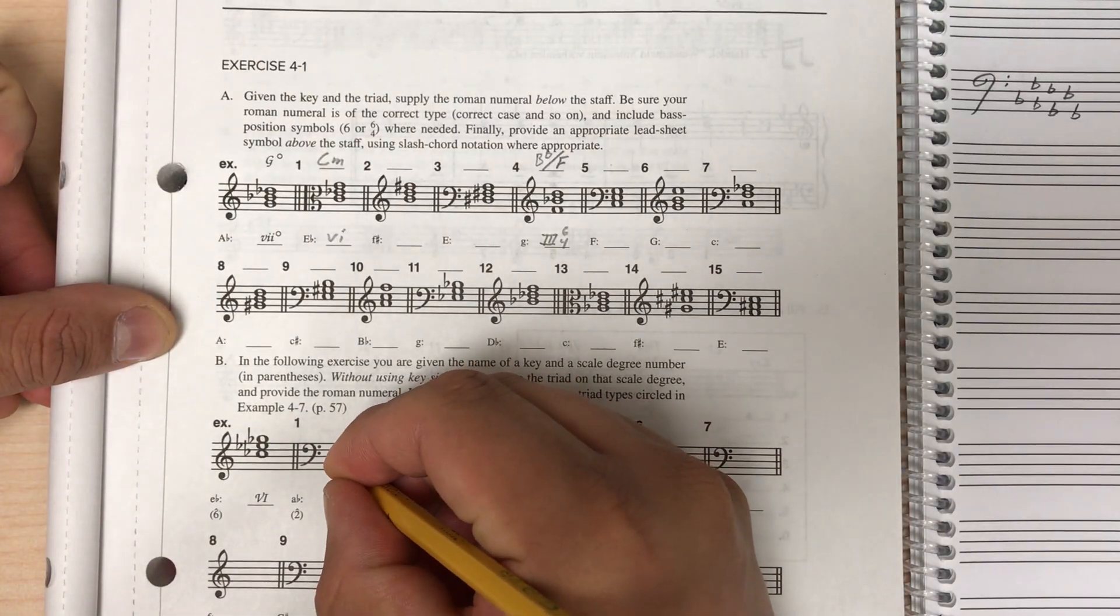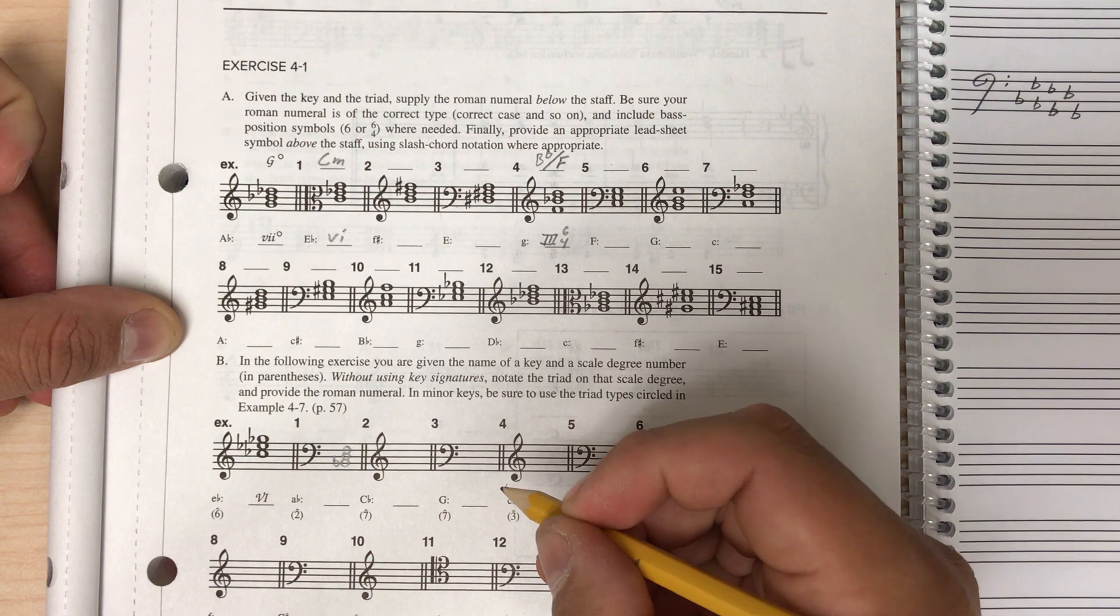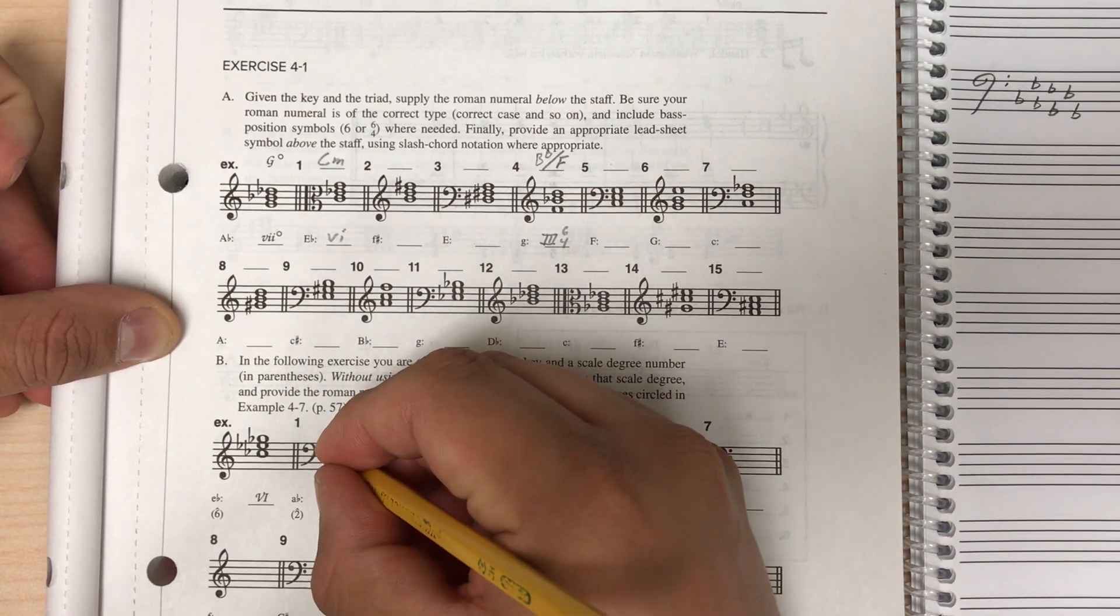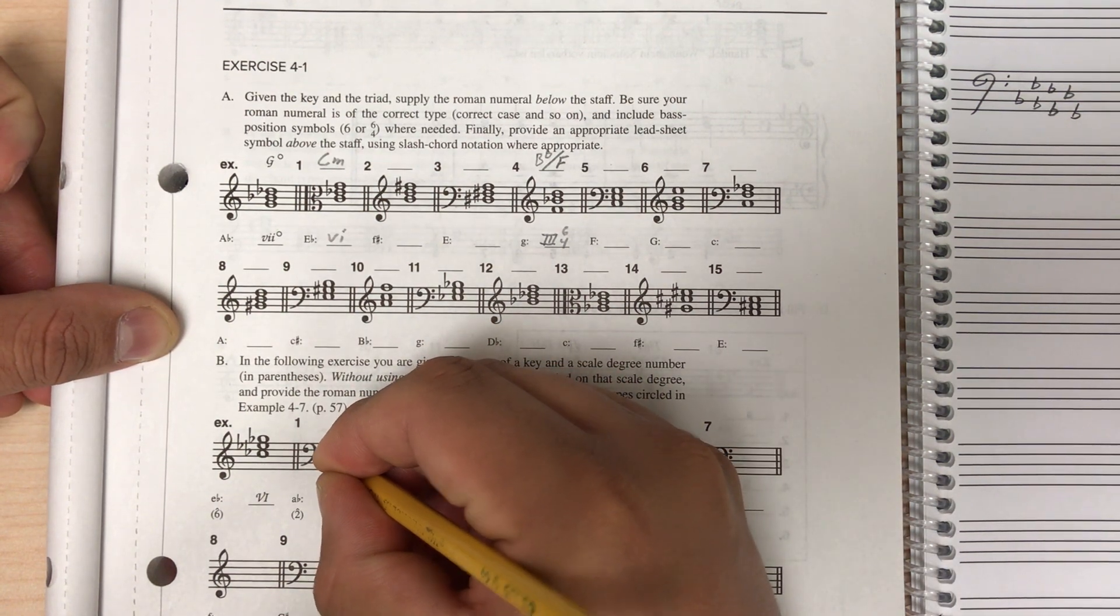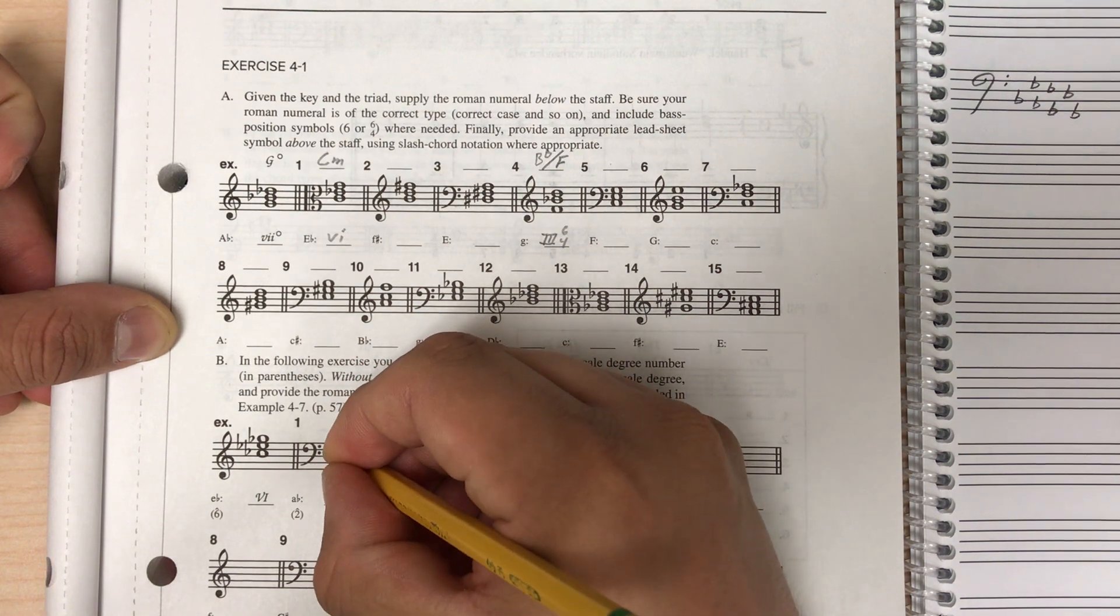So there's a Bb in the key signature, there's also a Db in the key signature, and there's an Fb in the key signature.